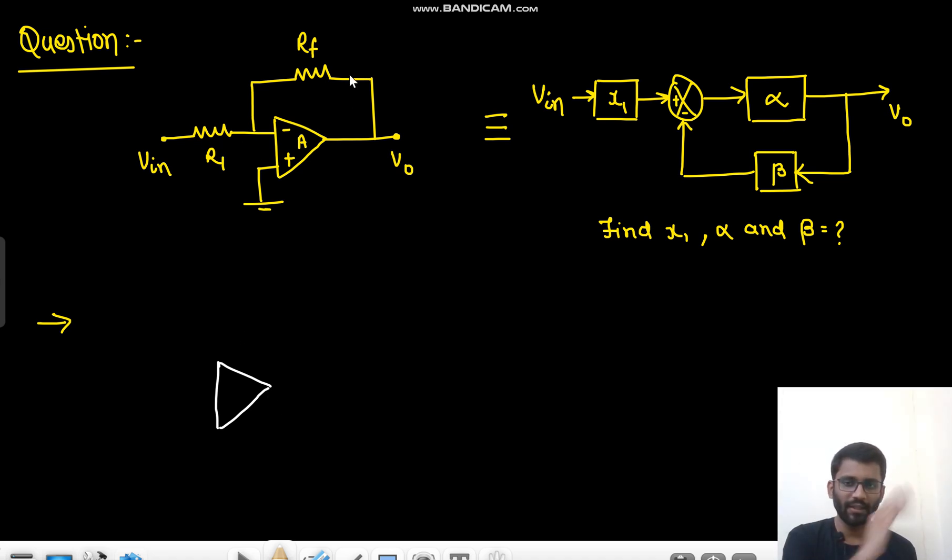Here, this is zero. This is input current, output voltage, current mixing, voltage sampling, transresistance amplifier, right? What I can do is that I can replace it something like this, a current source. The value is VIN by R1 and in parallel there is a resistance R1. We can do source transformation. And there is this feedback resistor, this is RF.